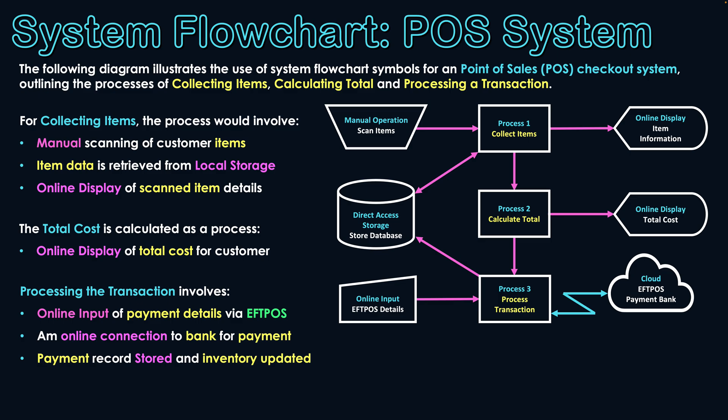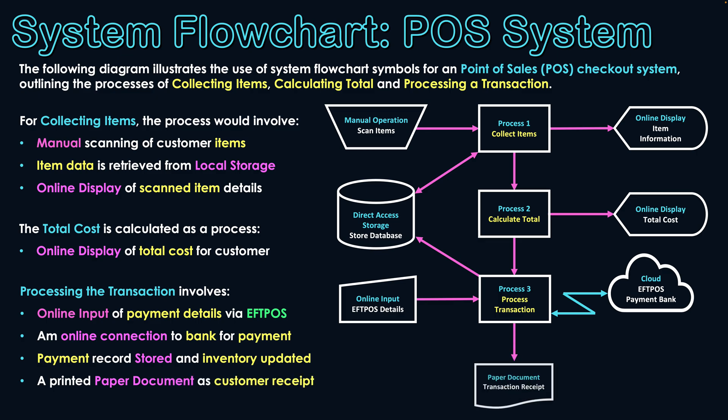Inventory is updated and a record of the transaction is stored — that's for the store's records. But the customer also needs a record of the transaction, and commonly that takes the form of a paper-based receipt. That gets printed off by the system so the customer has a record of the transaction as well.